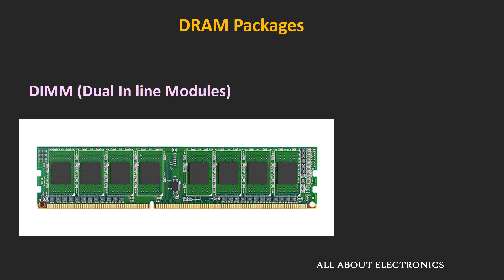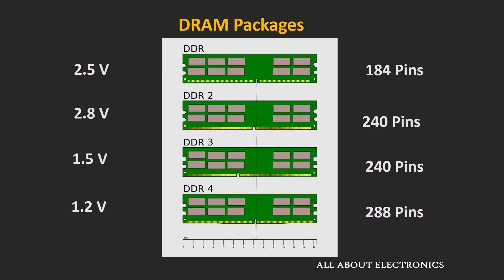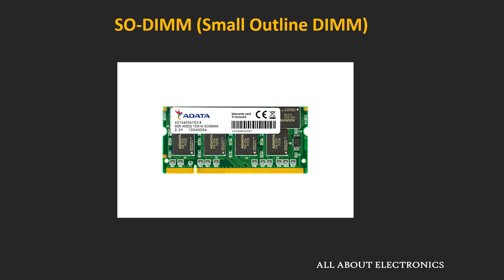All DDR generations are available in DIMM modules, but each generation has a different number of pins and different operating voltage, so none of the four generations are forward or backward compatible. A motherboard supporting DDR3 will not support DDR2 or DDR4. For laptops, a more compact form factor called SO-DIMM, or small outline DIMM, is used, and similarly has different pin counts and voltages across generations.